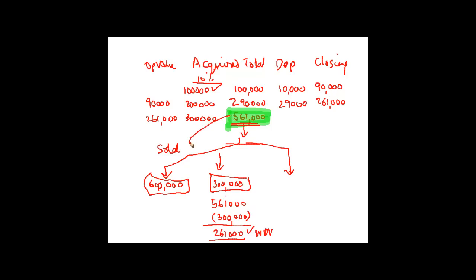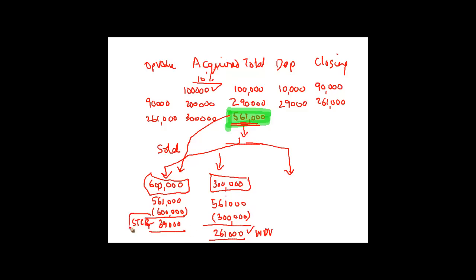The problem comes when I sell any of these assets for a value greater than 5,61,000. I sold it for 6 lakh; in that case I put down my written down value, reduce the sale consideration from it, and the difference — which is 39,000 in my case — is chargeable to short-term capital gains.